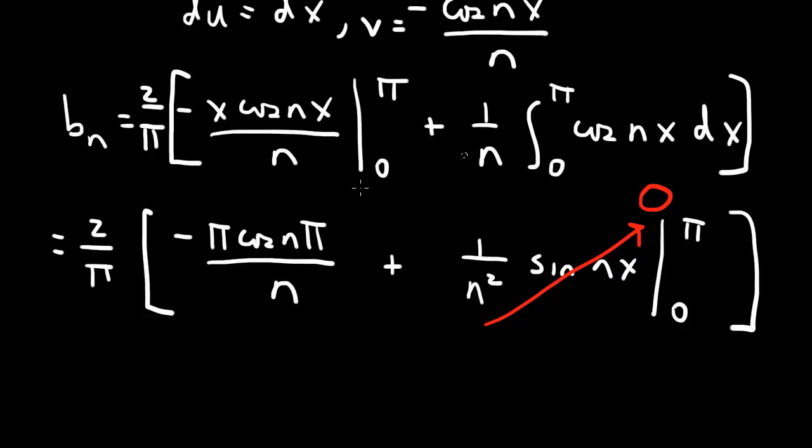So usually it's the other way around that the boundary term is 0 and the integral is not. But this case, it's reversed. The integral here is 0 and the boundary term is not. A little bit tricky.